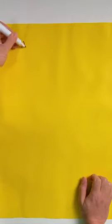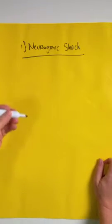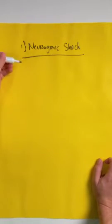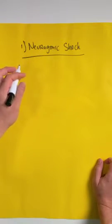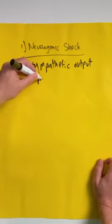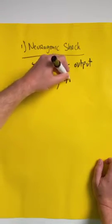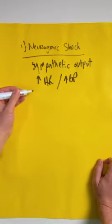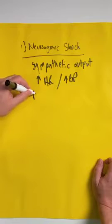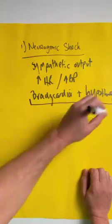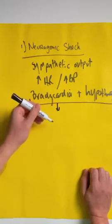Let's talk about the different types of distributive shock. The first one is neurogenic shock. This happens whenever there's a break in the cervical thoracic chain of the sympathetic system, which provides sympathetic output to the body — increasing heart rate and blood pressure. So when you have a break in that chain, you get a baseline bradycardia and hypotension. When you see bradycardia and hypotension together, you have to think about neurogenic shock.